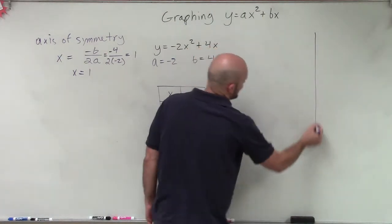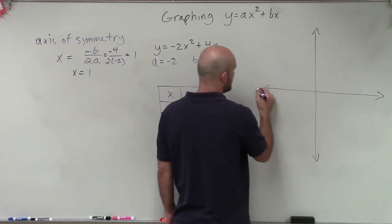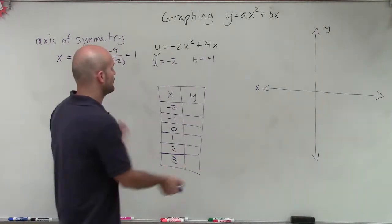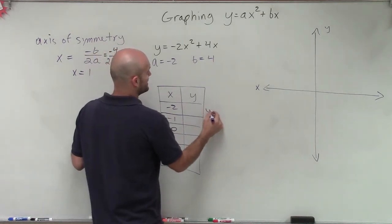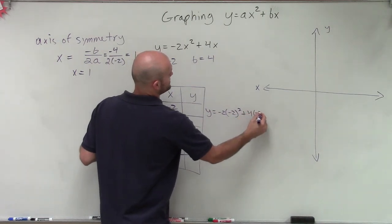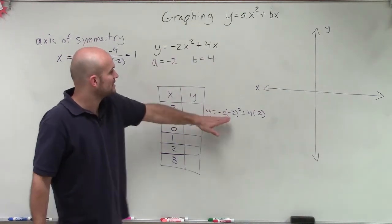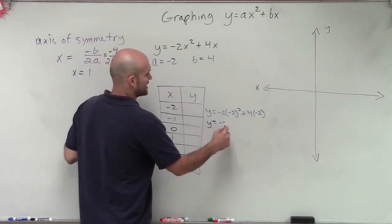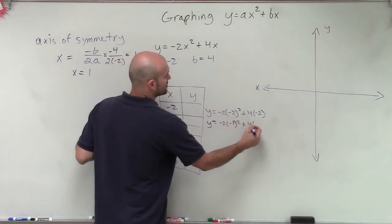To graph this and find the vertex, we create our x and y axes on a coordinate grid and find our values. Just like before, we plug in our x-coordinates to find our y-coordinates. So I have y equals negative 2 times negative 2 squared plus 4 times negative 2. Notice how I now have two slots to plug in x — I need to plug in the x-coordinate into both of them. Then y equals negative 2 times negative 1 squared plus 4 times negative 1.